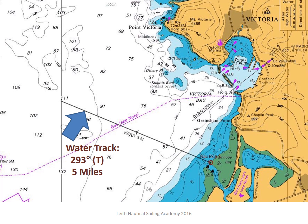On our chart we draw in the water track. The water track is the distance which we have travelled and the direction in which we were travelling. We mark the water track with a single arrow — this is the symbol that we use on our charts to show a water track.